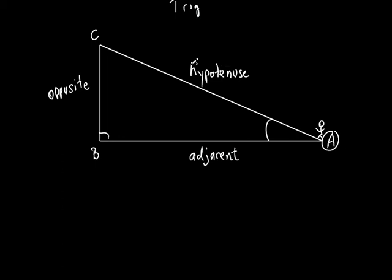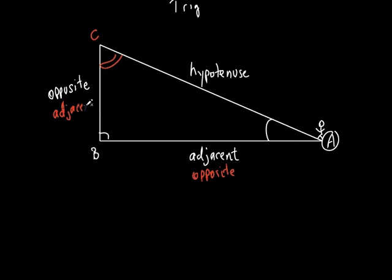But that's all about angle A. What if I said angle C? Let's color-coordinate — put that in red. So the white ones go together and the red ones go together. Look at angle C. What would this side be to angle C? It would be opposite. So it all depends on which angle you're looking at. If I'm talking about angle A, this side is opposite and this side is adjacent. But if I'm referring to angle C, then this other side is opposite, and this side is adjacent. That's really important.